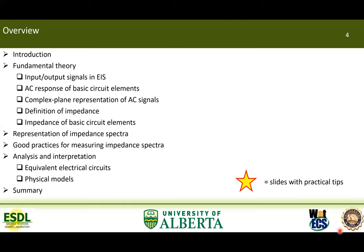Here is the overview of this presentation. We will first look at the input and output signals in EIS, including the AC response of basic electrical circuit elements. Through the complex plane representation of AC signals, we will define impedance and see what it looks like for basic circuit elements. Then we will discuss how to present impedance data and ensure its quality during measurements. After that, we will look at electrical circuits to develop insight and intuition in EIS, and give an example of more advanced physics-based modeling. Some slides contain practical tips marked with a star.